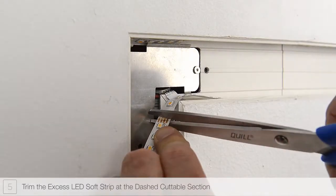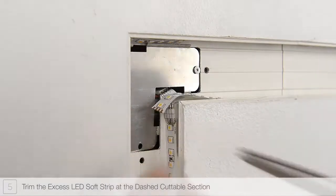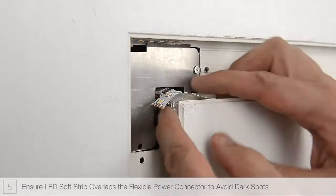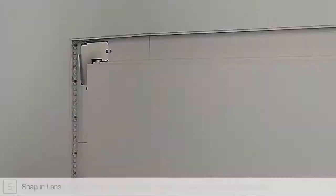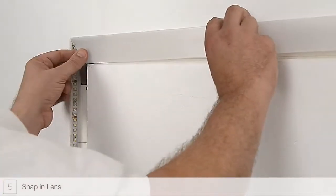It is important to only trim the strip at these lines. Ensure LED strip overlaps the flexible power connector to avoid dark spots. Press the lens into the channel, making sure that it is fully seated.